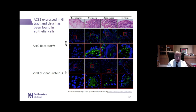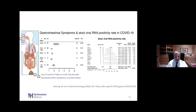Comparing viral shedding in oropharyngeal and nasopharyngeal samples versus stool, viral RNA can be identified in stool for up to 22 days after negative nasal swabs. However, this does not mean the virus is actually replicating. There is subgenomic viral RNA in relation to the full virus, and it is the RNA that is shed rather than living and replicating viruses.